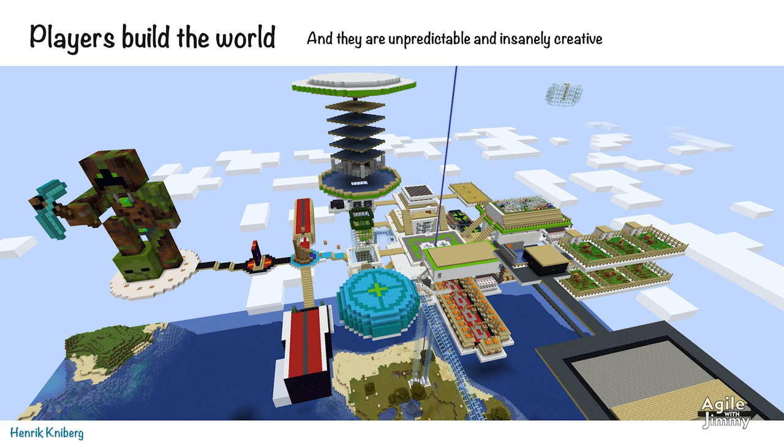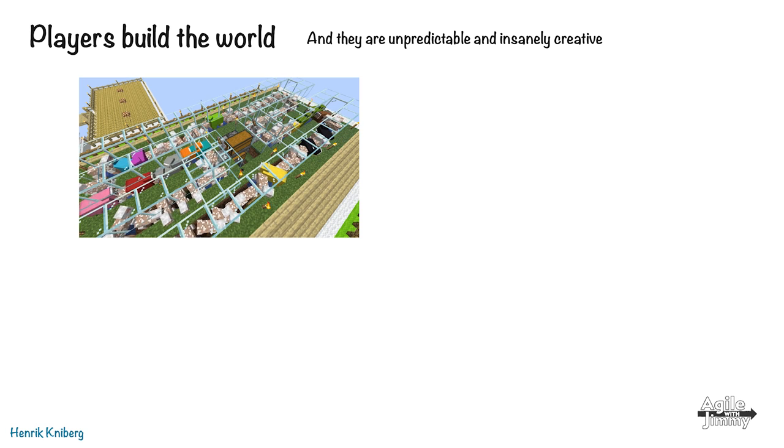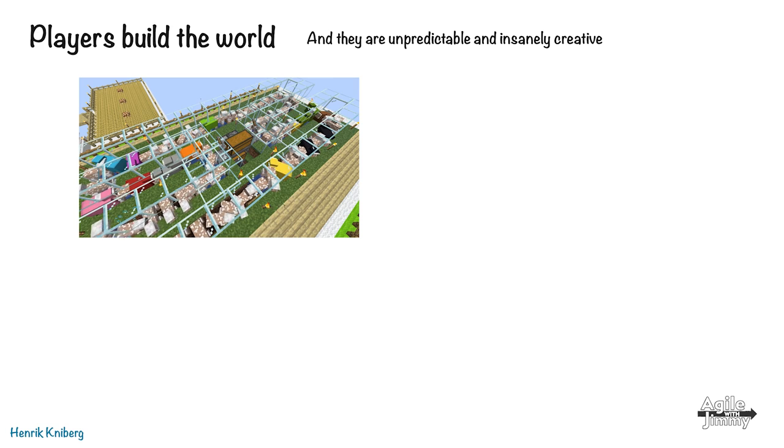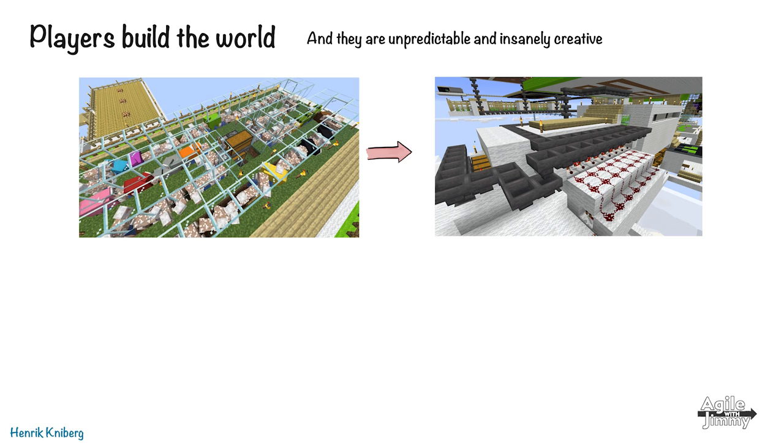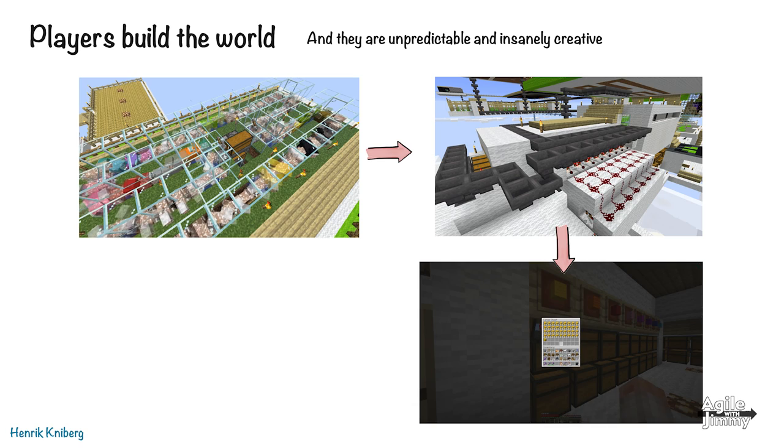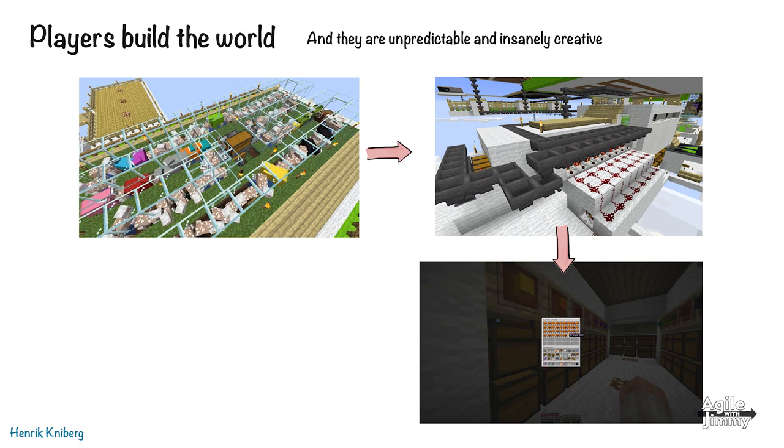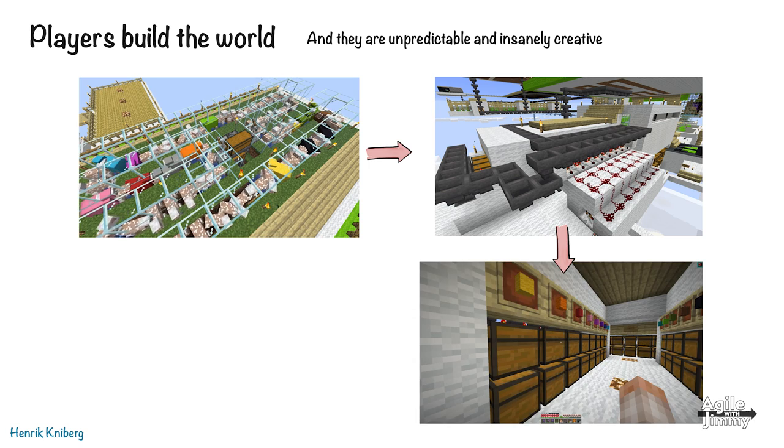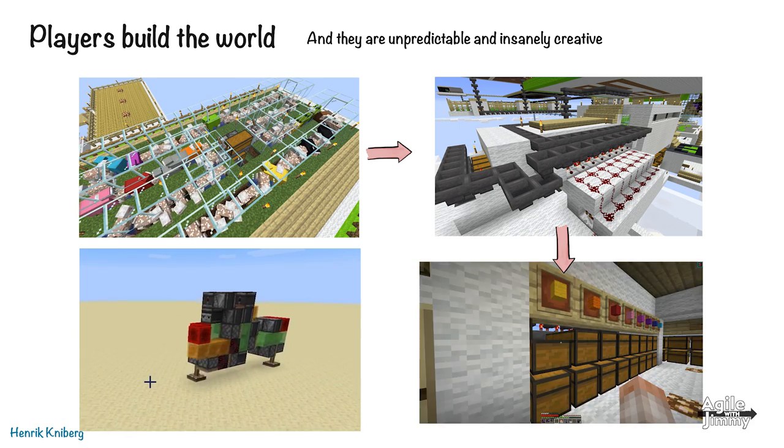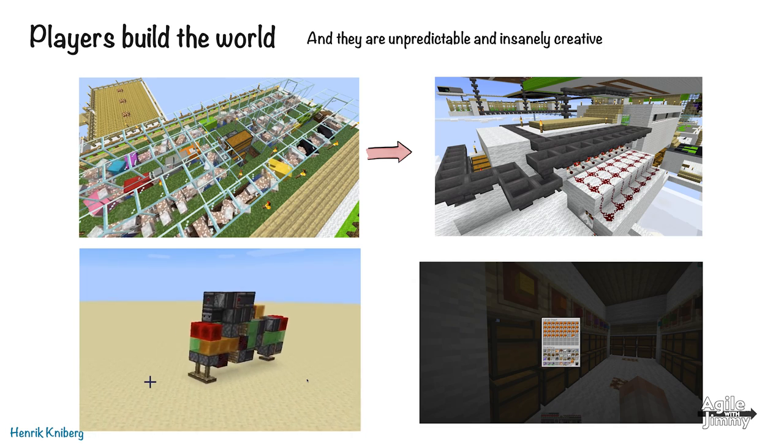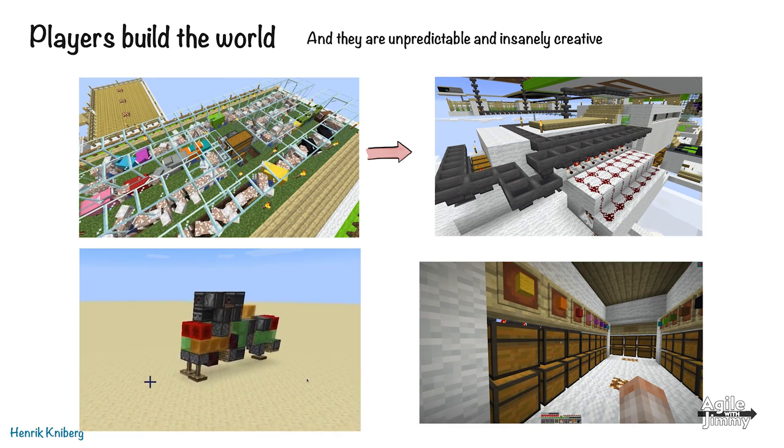It gets even crazier when you look at things like tech. We have a lot of technical players. This is my friend who built something he calls the sky farm, this massive big automated contraption high up in the sky. Just to give you an example, this is an automatic sheep shearing machine. Here we have sheep being sheared and then the wool gets sorted automatically in this bunch of hoppers and ends up in different chests. If you want orange or red or yellow wool, you can go pick it up. This is by many standards a fairly simple machine. You can see even more crazy complex machines, like this walking machine that someone built. We have no idea what the heck people are going to do. So how can we test that stuff actually works? That was our challenge.